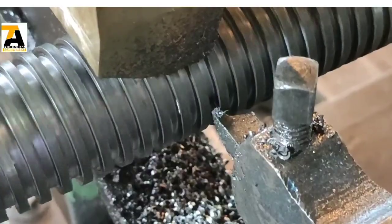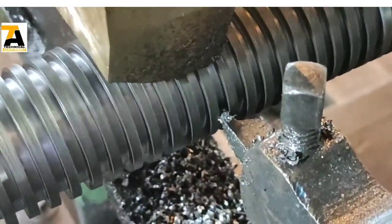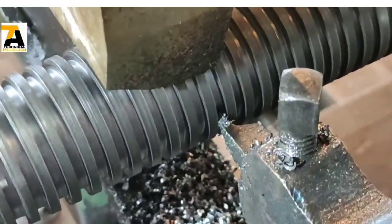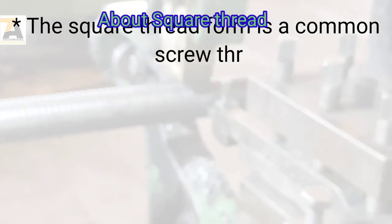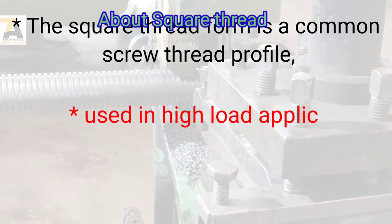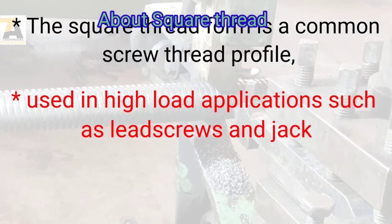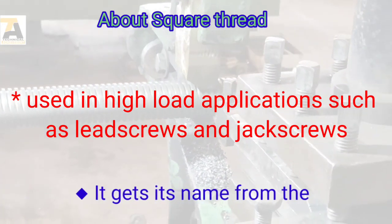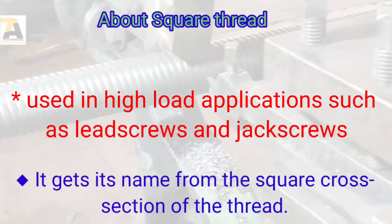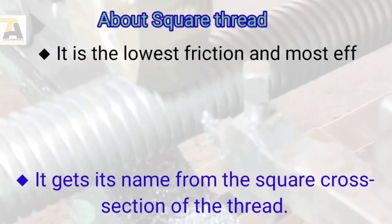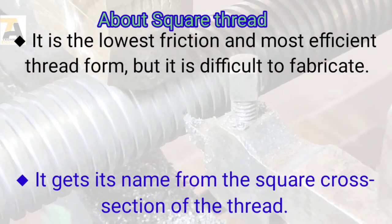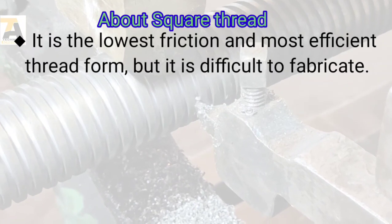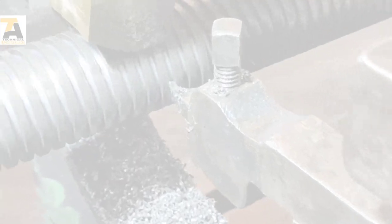First, we will learn what is a square thread and what are the uses of square threads. The square thread form is a common screw thread profile used in high load applications such as lead screws and jack screws. It gets its name from the square cross-section of the thread. It is the lowest friction and most efficient thread form, but it is difficult to fabricate.